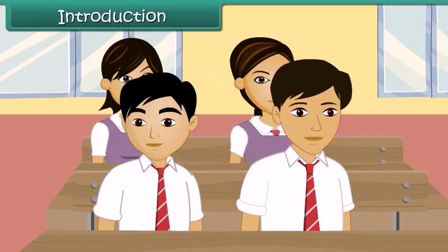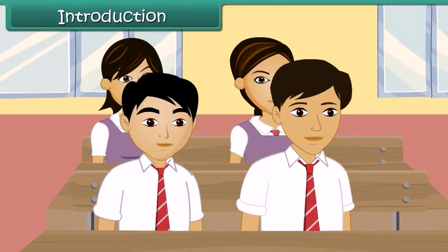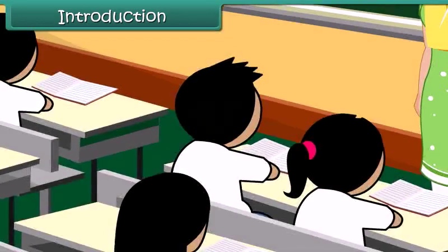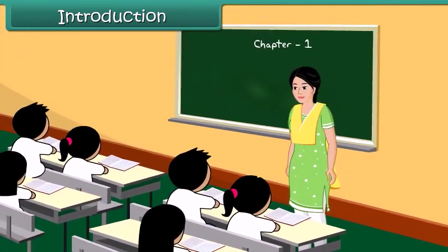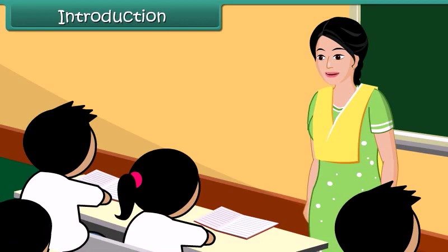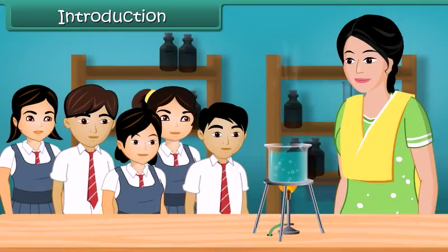Aman is eight years old and extremely naughty. Today the science teacher has promised to take Aman's class to the chemistry laboratory to demonstrate some experiments. Once in the lab, Aman wanders away from the group.